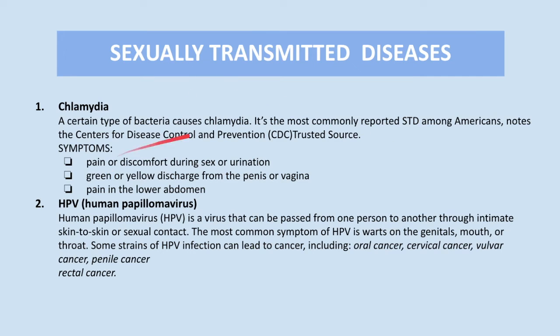Many people with chlamydia have no noticeable symptoms. When symptoms do develop, they often include pain or discomfort during sex or urination, green or yellow discharge from the penis or vagina, and pain in the lower abdomen.